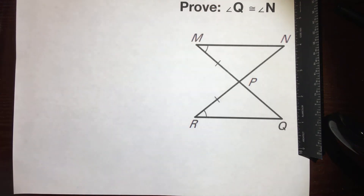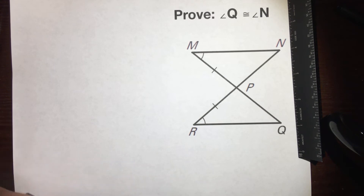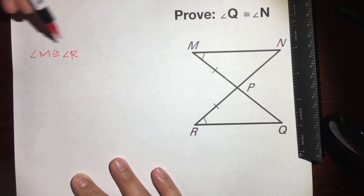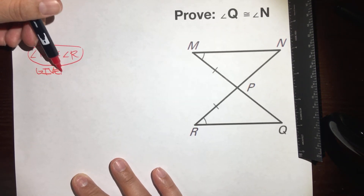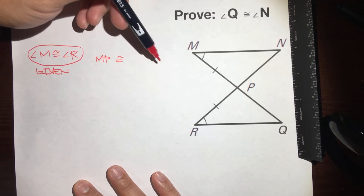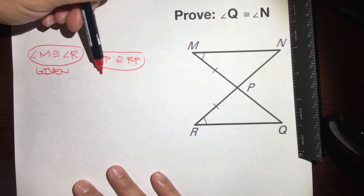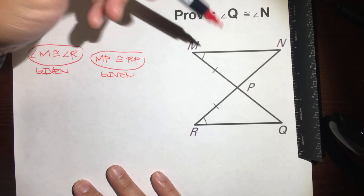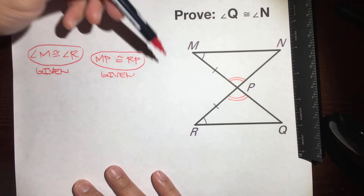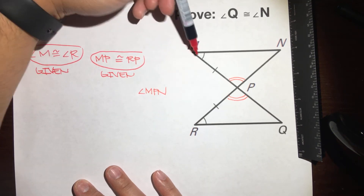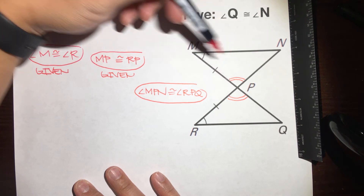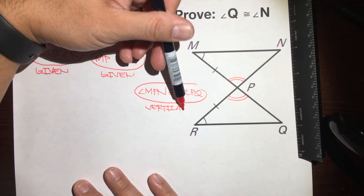Let me show you another example. This time prove angle Q is congruent to angle N. It looks like these two triangles are congruent, so let's prove them. We have angle M is congruent to angle R — one arc and one arc, already there, reason: given. We have side MP is congruent to side RP, reason: given. Next, this angle is vertical to this angle, so angle MPN is congruent to angle RPQ, reason: vertical angles.